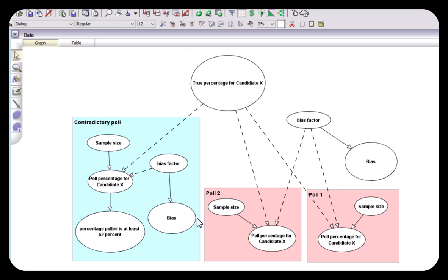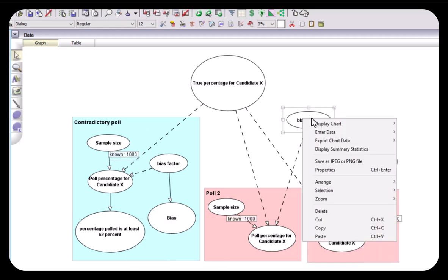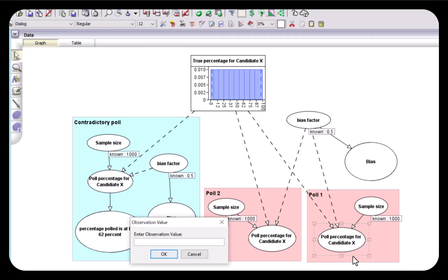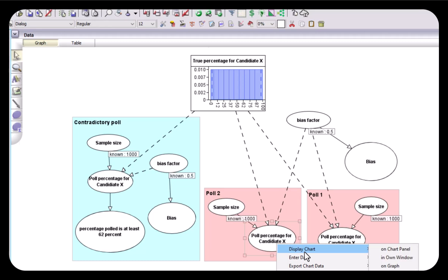First of all let's assume that they've all got a similar typical sample size of a thousand people. Let's assume that there isn't any bias, neither in those two polls nor in this poll. So let's now observe 50 percent for X in that poll and let's say 49 percent for X in this poll, and we'll run the model and see what it learns about the true percentage for candidate X.